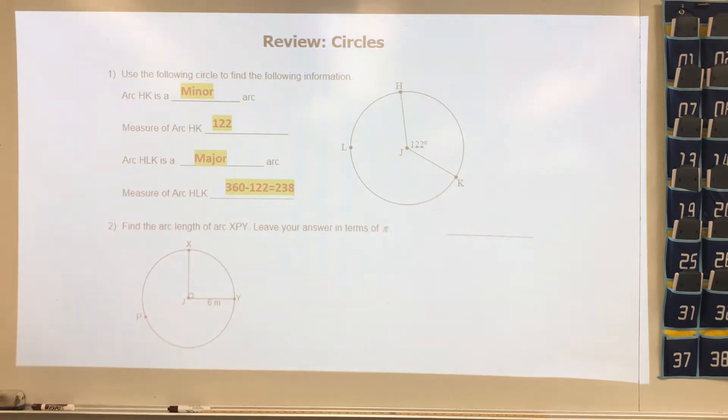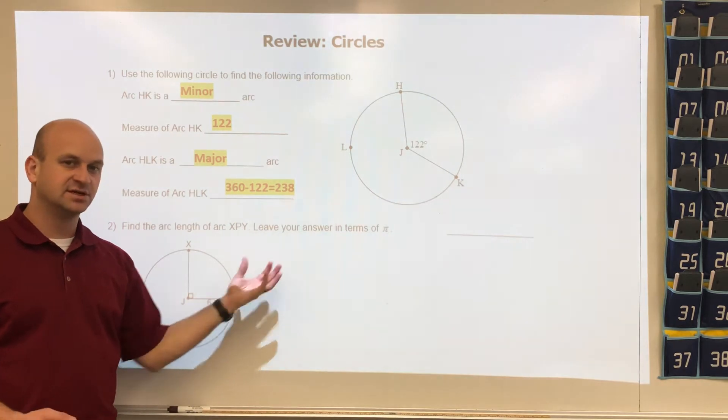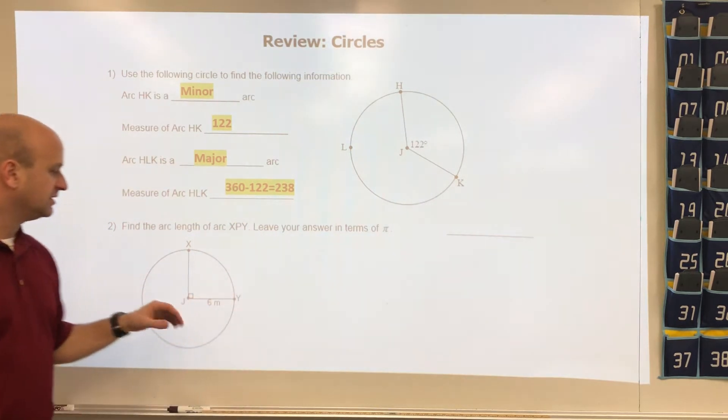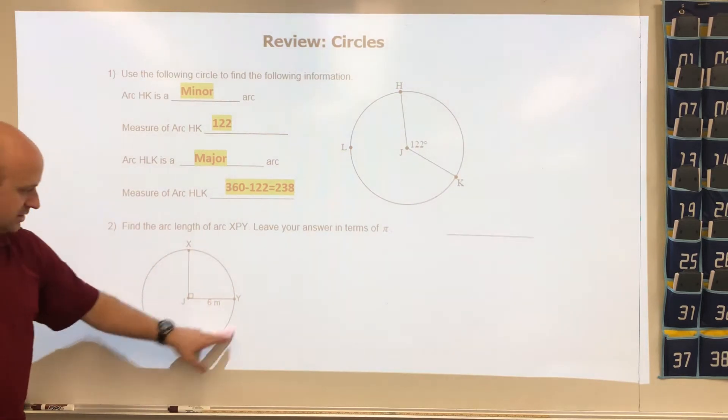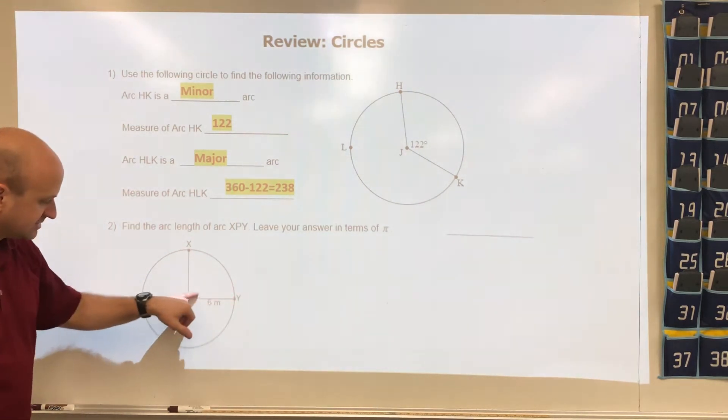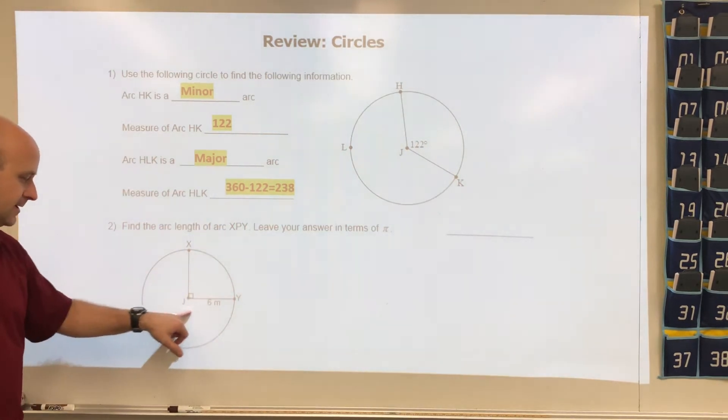Number two, we're talking about arc length. Arc length is going to be the degrees we want over 360 times the circumference. In this problem they want arc XPY, so we're talking about this major arc. They give us this is 90, which tells us if we do 360 minus 90, this is a 270 degree part of the circle.